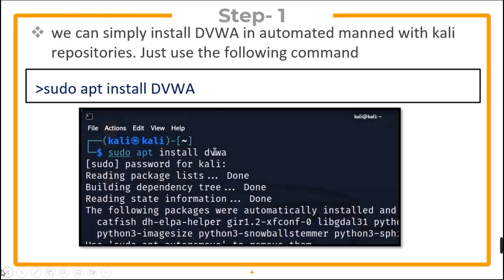In step one, we can simply install DVWA in an automated manner using the Kali repositories. Just use the command sudo apt install dvwa and Kali will automatically install it.